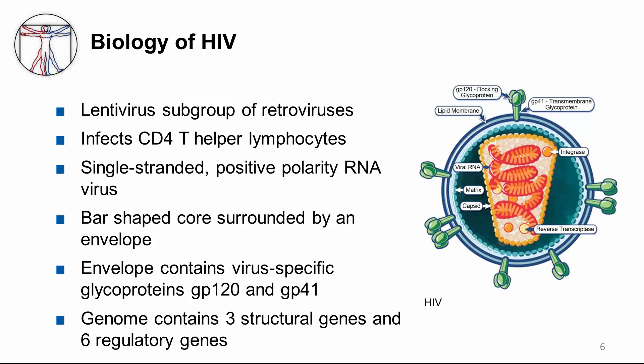HIV is a single-stranded positive polarity RNA virus. It has a unique look with a bar-shaped core surrounded by an envelope. The envelope contains virus-specific glycoproteins called GP120 and GP41, which protrude from the surface of the cell and interact with the CD4 receptor that the virus wants to infect. GP120 is the one that protrudes from the surface of the viral envelope, and GP41 is somewhat embedded in the envelope.